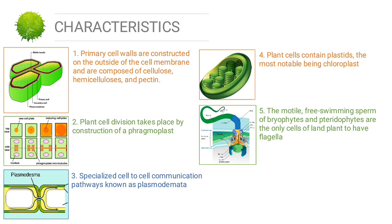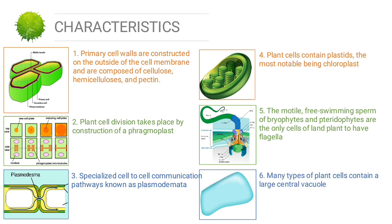The next characteristic: the motile free-swimming sperm of bryophytes and pteridophytes are the only plant cells to have flagella — specialized cells similar to those in animal cells. However, conifers and flowering plants do not have motile sperm, unlike those with flagella and centrioles.